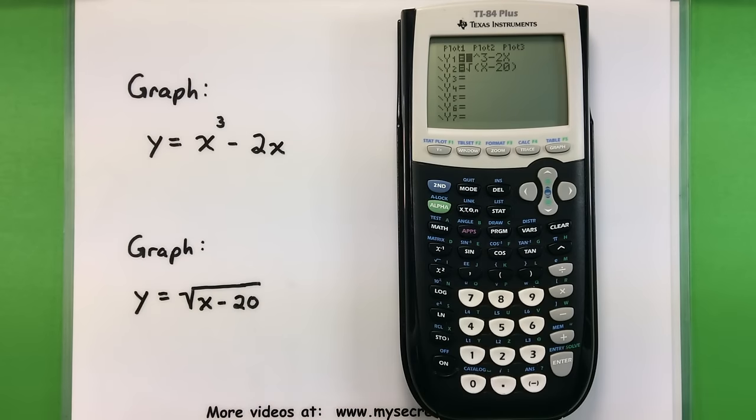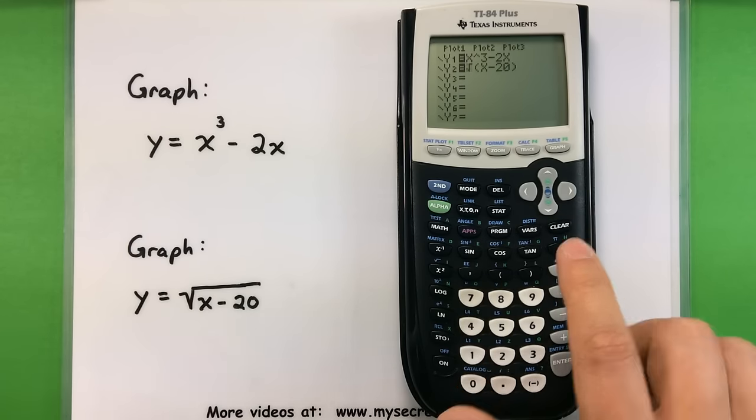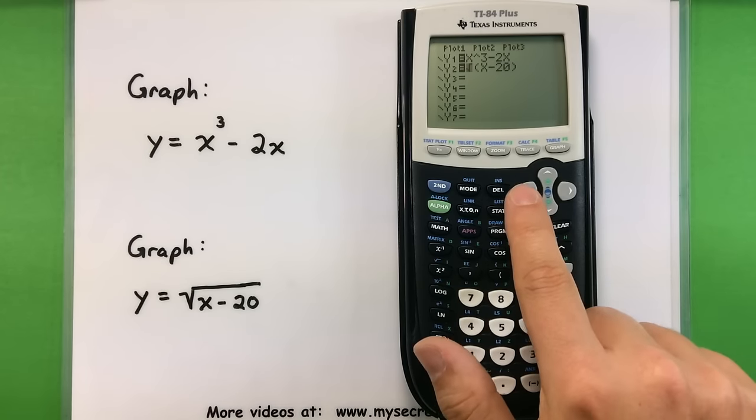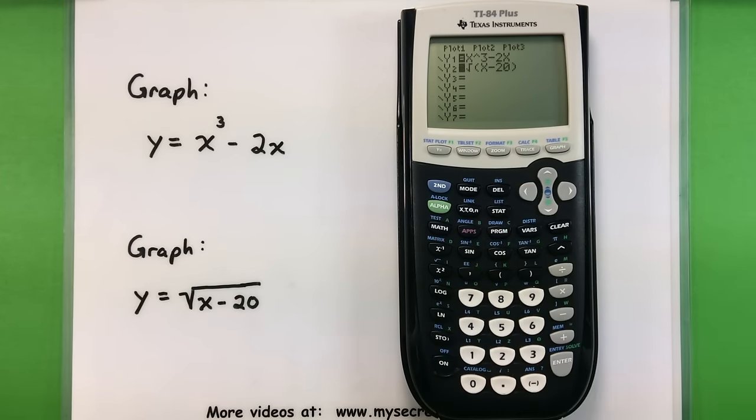Let's go back to our Y equals. If you only want to see one of these or you want to remove one of them, of course you can hit the clear button. That'll erase one of them. You can also shut them on and off by pressing your left arrow button until the equal sign is highlighted. Then press enter and it will essentially shut that one off. It will not graph that one unless its equal sign is highlighted. So now we'll go back to that picture. It only graphs the first one. Doesn't even worry about the second one.